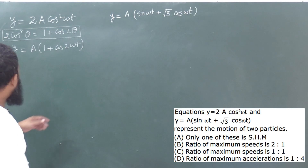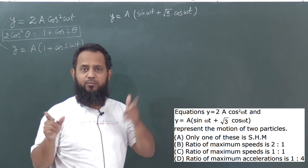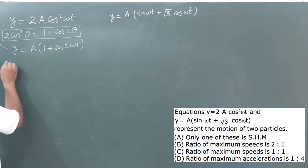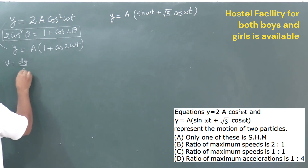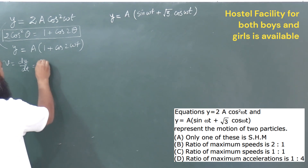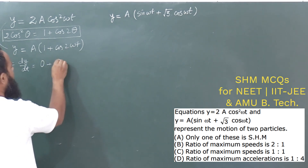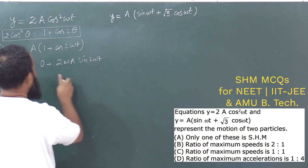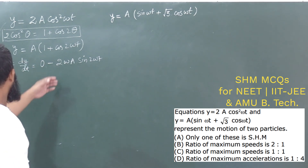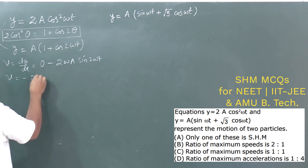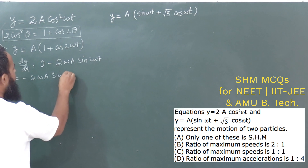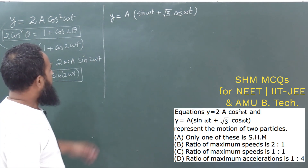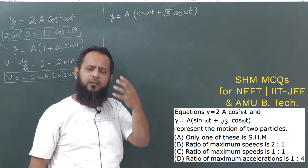अब क्योंकि displacement में cos(2ωt) आ गया, यह SHM है। Speed निकालने के लिए v = dy/dt करते हैं। Constant term का differentiation 0 आएगा। cos(2ωt) का differentiation करने पर: v = -2ωa sin(2ωt). So the velocity of particle one is v = -2ωa sin(2ωt).